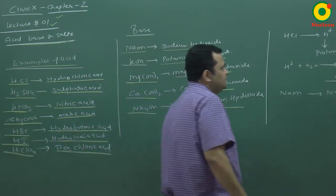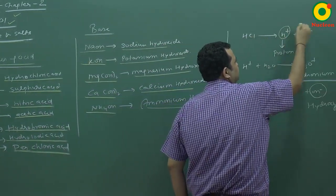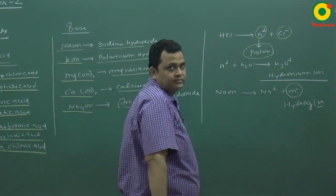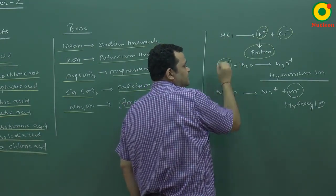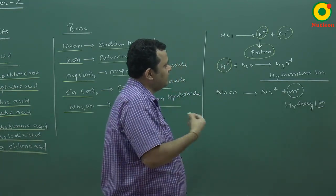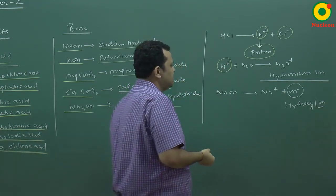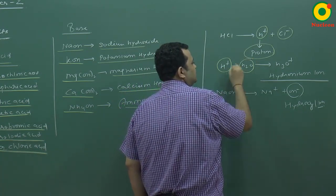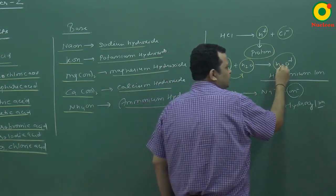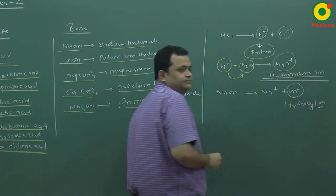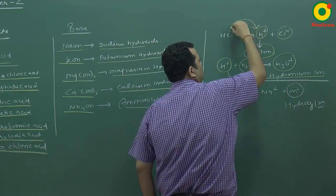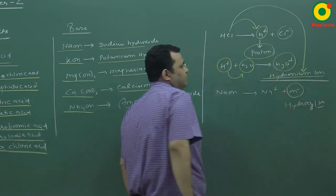HCl dissociates into H+ and Cl−. This H+ is called a proton. The proton cannot exist independently — when HCl is dissolved in water, H+ immediately reacts with a water molecule to form H3O+ ion. This H3O+ ion is called the hydronium ion. So we can define an acid as a substance which can donate H+ or form the hydronium ion H3O+.